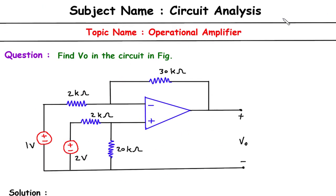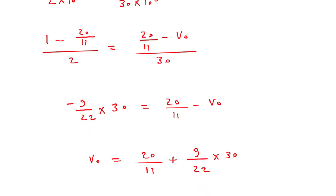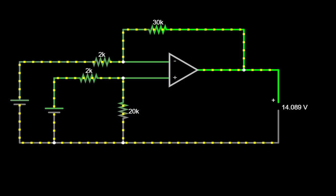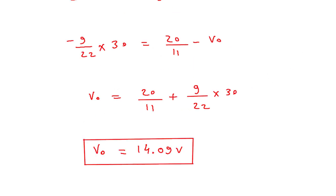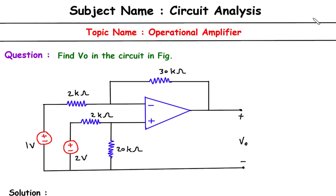What we had to find in this question was V0. Using the simulator app, we obtained 14.089 V, which is approximately equal to 14.09 V. Hence we can confirm this answer is correct. If you find this video helpful, feel free to donate — the link is in the description. Also feel free to like, share, and subscribe to this channel. Thank you.